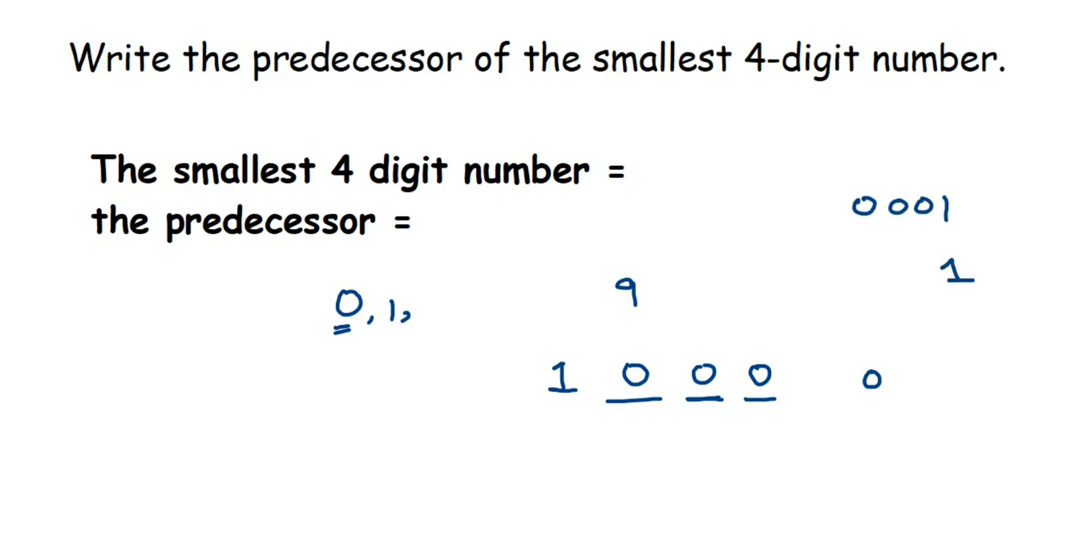So like that, if I place one anywhere else, like 0010, it will become ten. That is why I have to put the number at the beginning so the number will become one thousand, and it is a four-digit number.